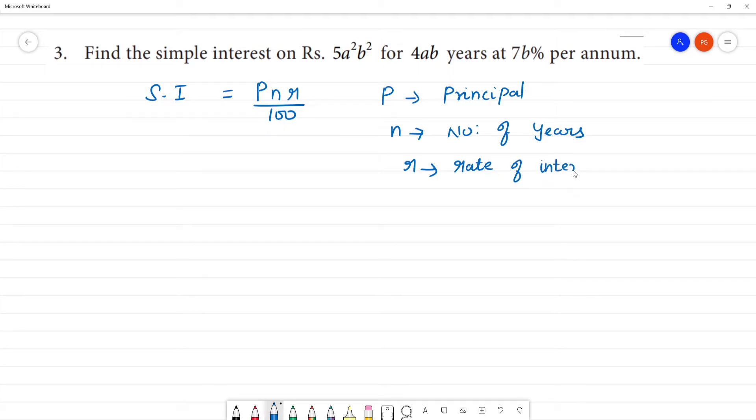Okay, so substituting into the formula: this is equal to principal amount 5a²b², number of years is 4ab.